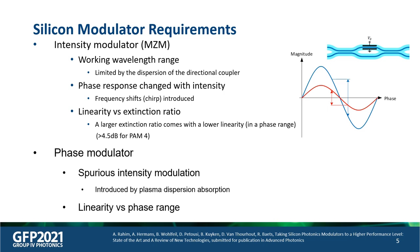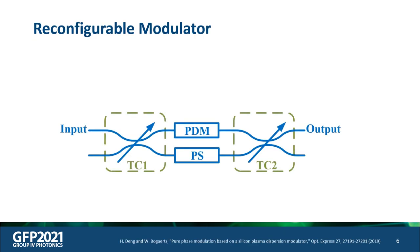For a phase modulator, as we discussed, it always has spurious intensity modulation because it is introduced by the plasma dispersion absorption, and it is also hard to achieve good linearity with a wide phase range at the same time. So in this talk, we propose a reconfigurable modulator design to try to optimize for many of these applications.